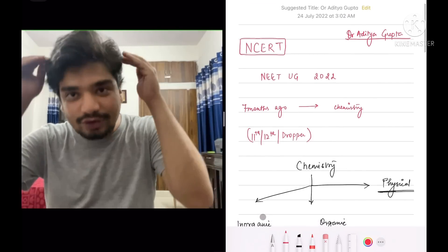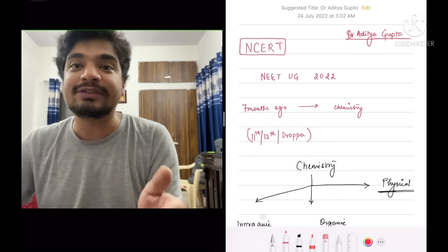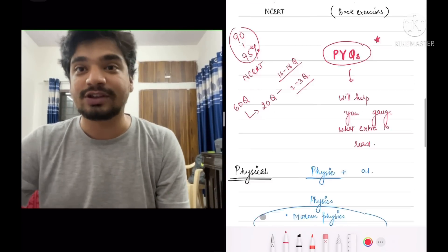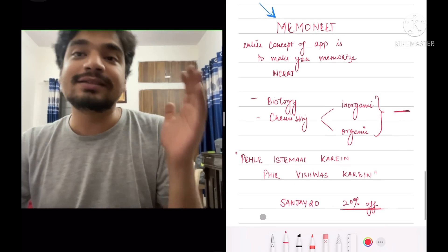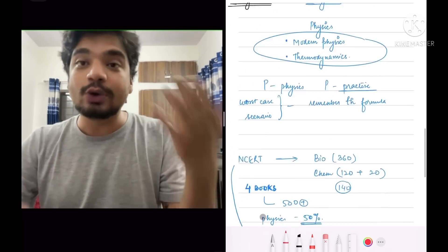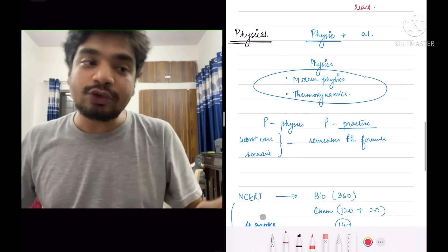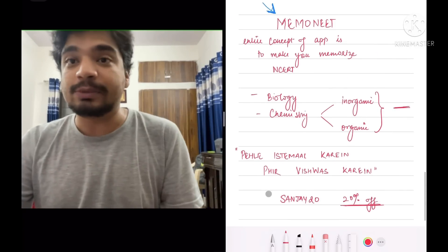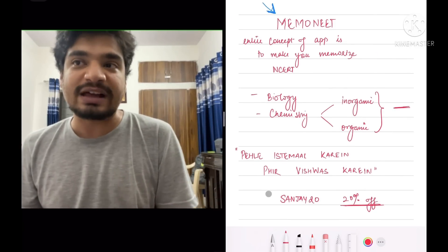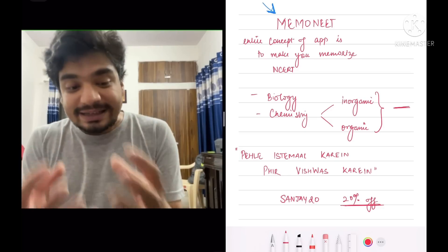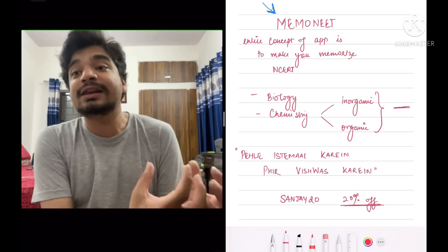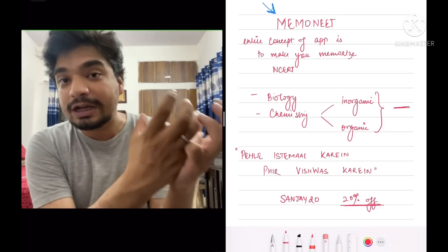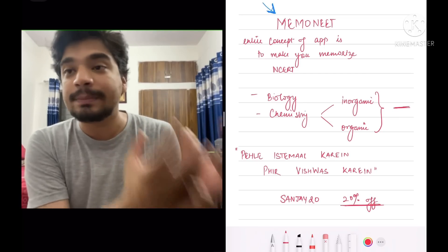The question is that you should read NCERT thoroughly with each and every line. It will help in your assertion reason questions as well. As far as that is concerned, people want to keep on asking, how do I remember NCERT? I used to make questions from NCERT by myself. I did not have the opportunity of using an app called Memoneet. I really, really like the concept of this app called Memoneet because it literally makes you questions from each and every line of NCERT.